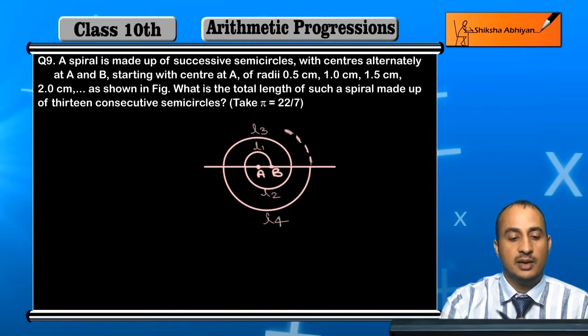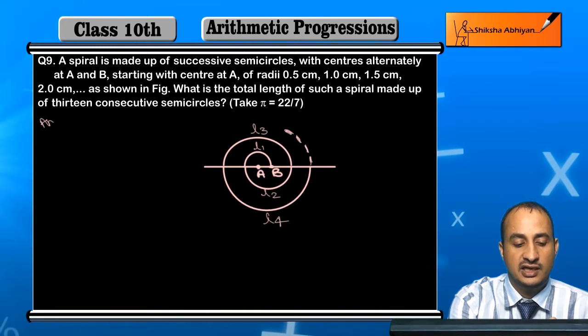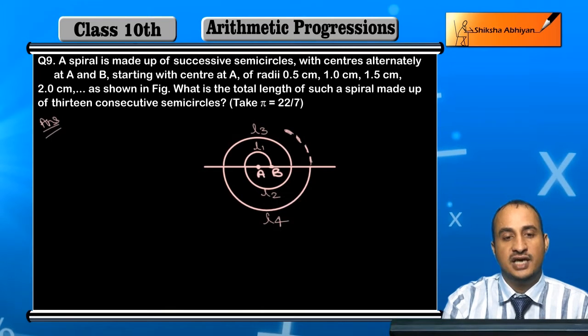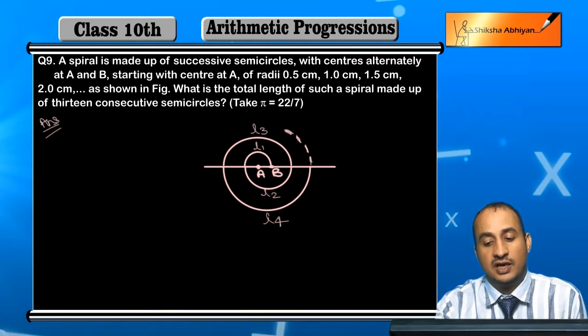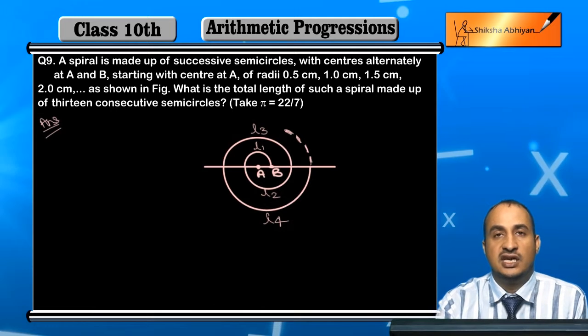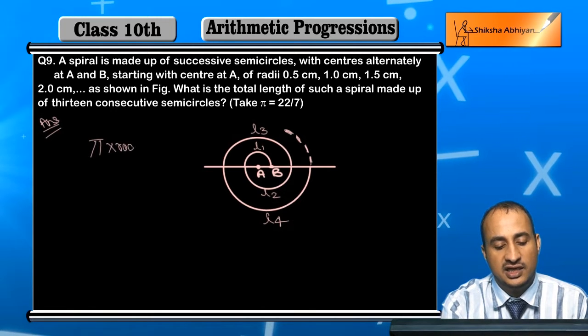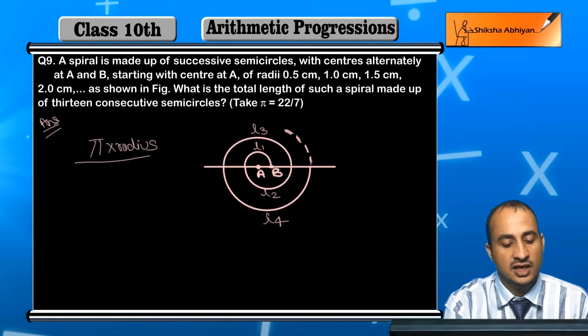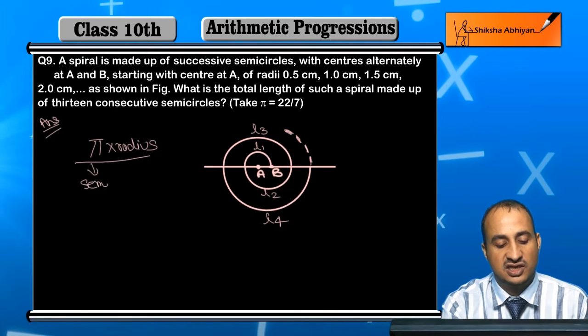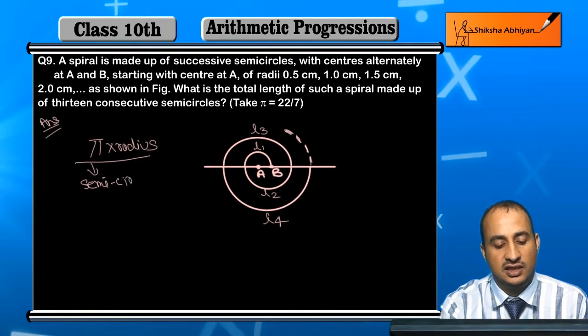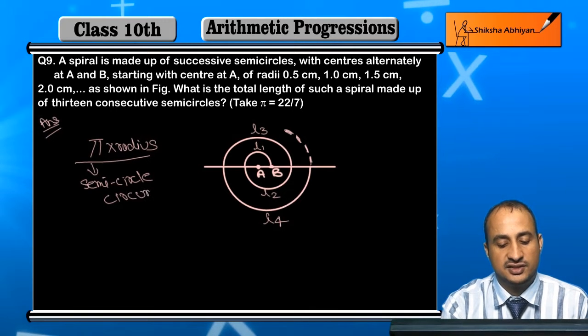I have seen all the figure here. We will take the length. First, the semicircle. How much length is the length? Pi into the radius. Pi into the radius. What is semicircle? The semicircle circumference.